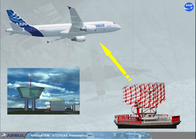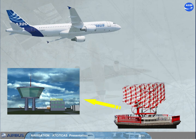The A320 family has two ATC transponders, which transmit several parameters upon ground request. Depending on the installed system, refer to your documentation. These parameters can be speed, Mach, and barometric vertical speed data from the ADRs.